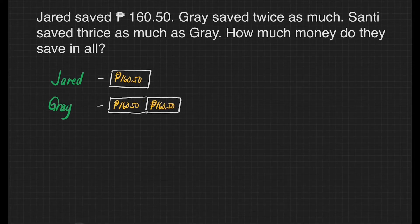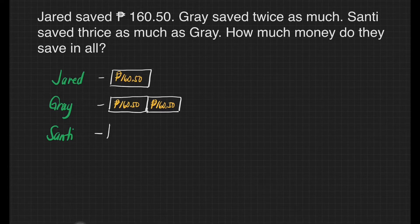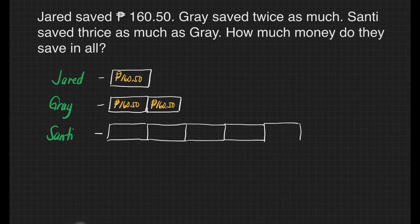Now let us have Santi. Santi has twice as much as Gray. So if Gray has two boxes with 160 pesos in each box, we need to make it triple. So it means he has six boxes in all. Now we'll have 160 pesos and 50 centavos in each box.